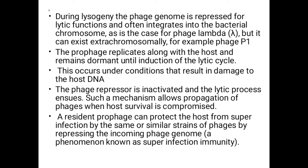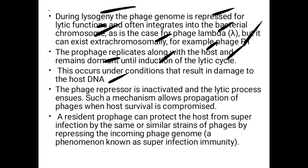During lysogeny, the phage genome is repressed for lytic function and often integrates into the bacterial chromosome, as is the case for phage lambda, but can exist extrachromosomally, for example phage P1. The prophage replicates along with the host and remains dormant until induction of the lytic cycle. This occurs under conditions that result in damage to the host DNA, and the lytic process ensues.